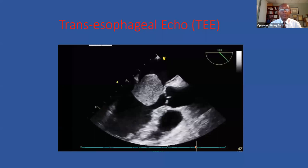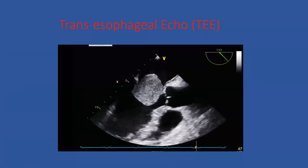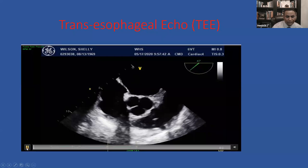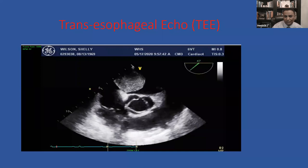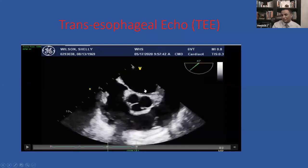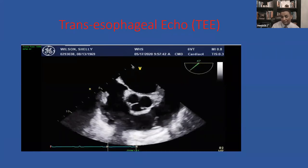How do you differentiate myxoma from thrombus? Thrombus in the left atrium is typically in the left atrial appendage. This mass is well-formed with a stalk attached to the interatrial septum — thrombus rarely becomes that large or that organized. If you had a thrombus that big, you would have already had many complications including stroke and systemic emboli before it reached that size.